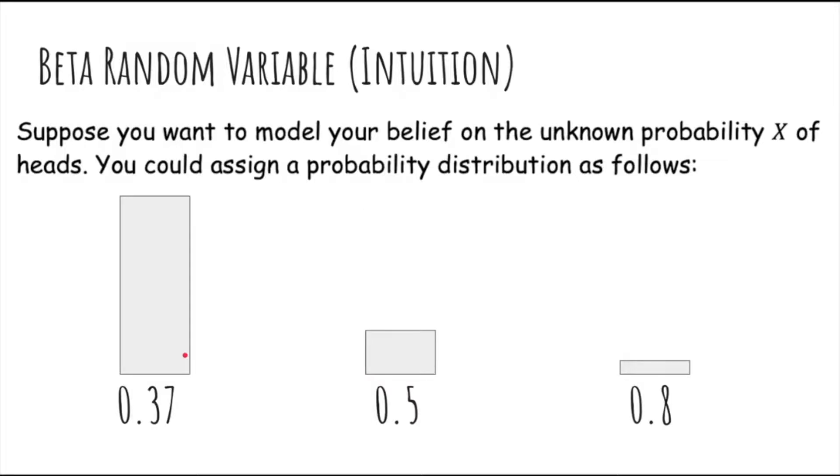Or after you've observed more flips, you could think that it's most likely that it's 0.37 and less likely that it's something else.